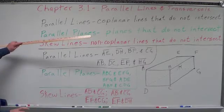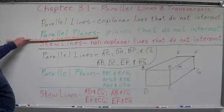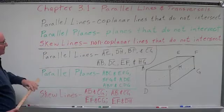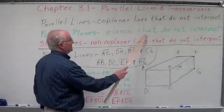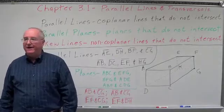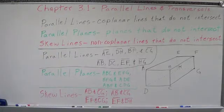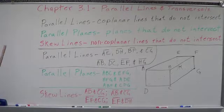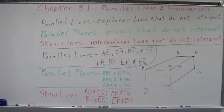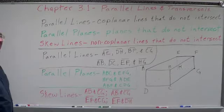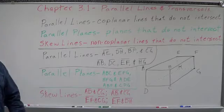Next we have parallel planes — flat surfaces that do not intersect. For instance, in a box: the front and the back, the top and the bottom, the left side and the right side. In this room: this wall and the back wall, the right wall and the left wall, the ceiling and the floor. Those would be considered parallel planes.